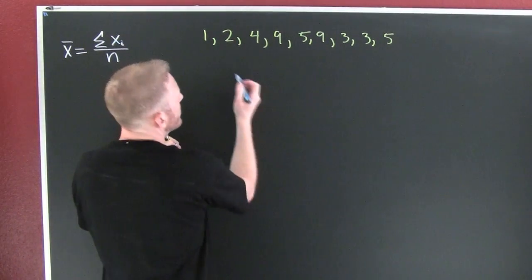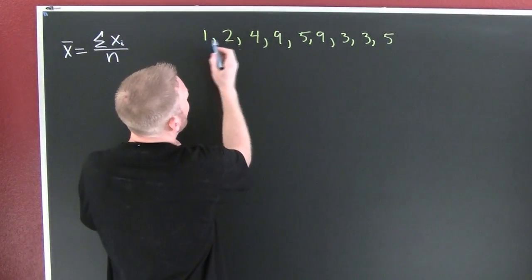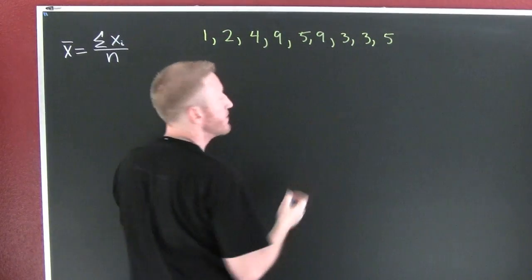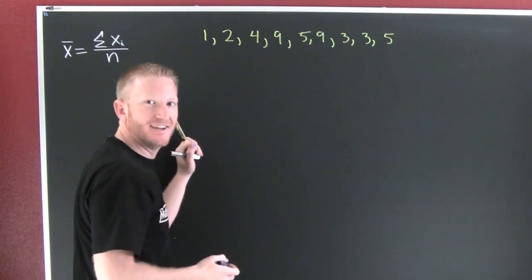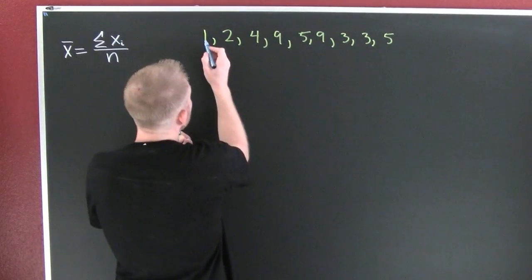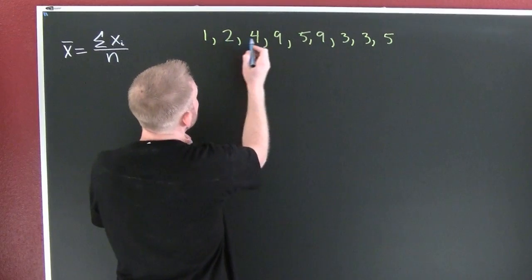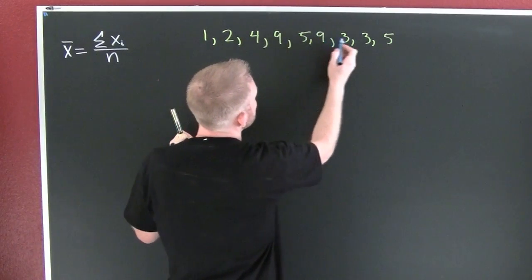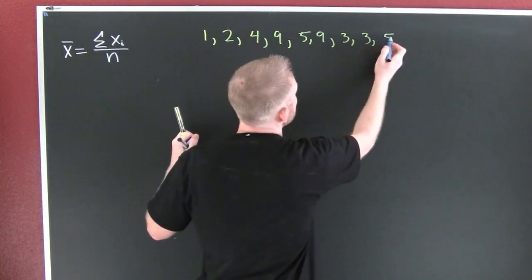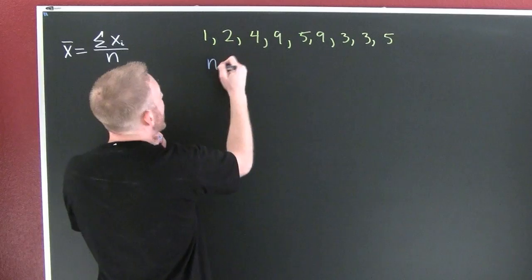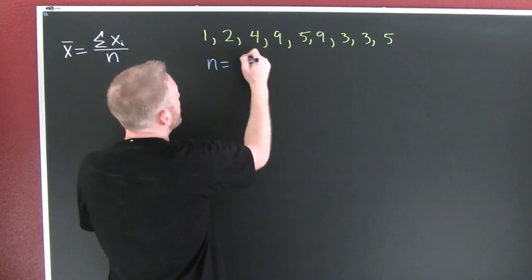Let's count the number of numbers here. One, two, three, four, five, six — I lost my count, let's try that again. One, two, three, four, five, six, seven, eight, nine. There are nine numbers.